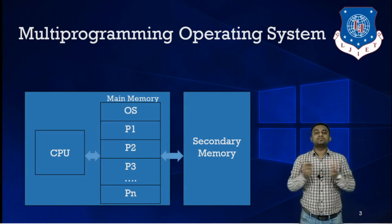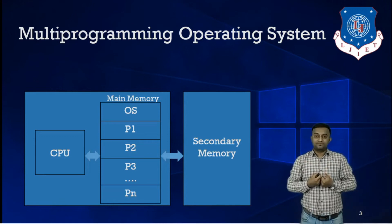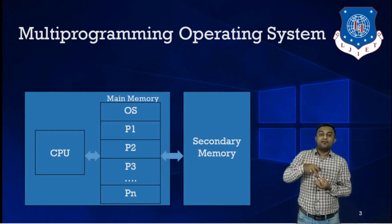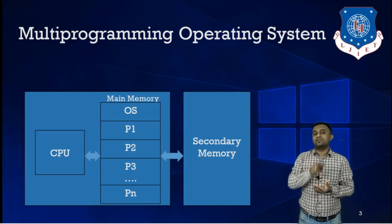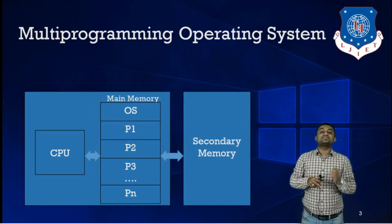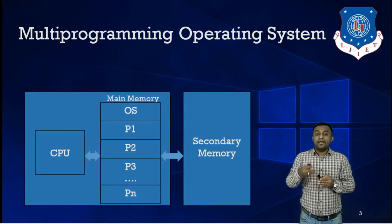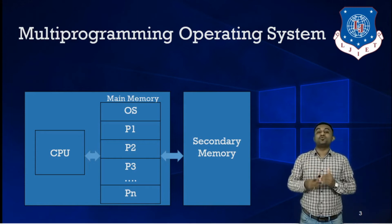This is the main concept of multiprogramming operating system. Similarly, if P2 after some time goes to IO operation, again context switching would be performed. If we have P3 — another process ready for execution in main memory — the CPU will fetch that process and start its execution. This continues until there is no process available in the ready queue in main memory. In this way, you can minimize the CPU idle time, and that is the main objective of multiprogramming operating system.